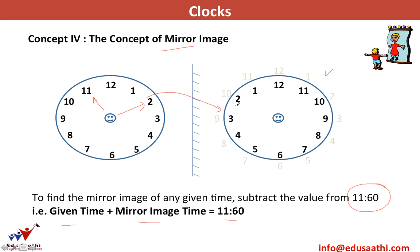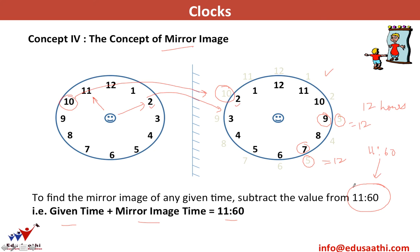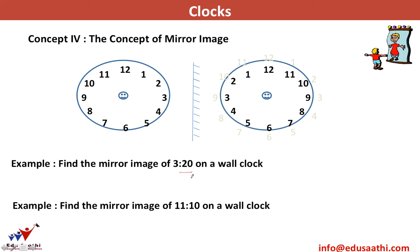Mirror image: if a clock shows 11:10 and you place a mirror beside it, what time does the mirror show? To find the mirror image of any given time, subtract from 11:60 — that is, given time + mirror image time = 11:60. The reason: on a clock face, symmetric positions add up to 12 hours (e.g., 10 + 2 = 12, 7 + 5 = 12, 9 + 3 = 12), and 12 hours = 11 hours 60 minutes.